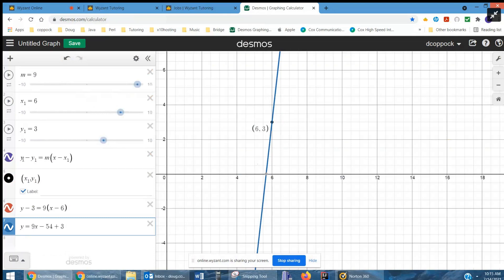And here's point-slope form right here: y minus y sub 1 equals m times x minus x sub 1.